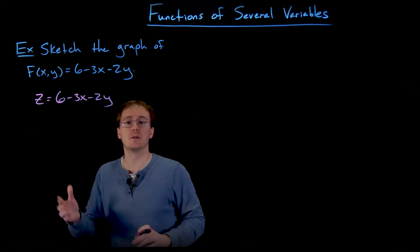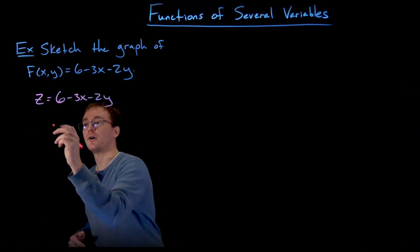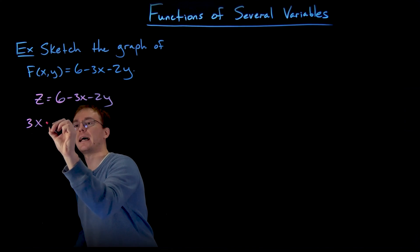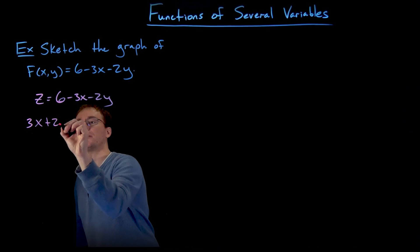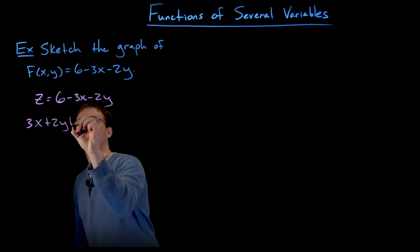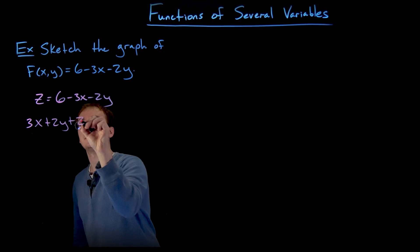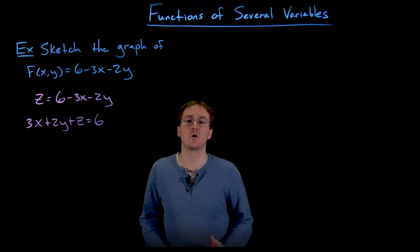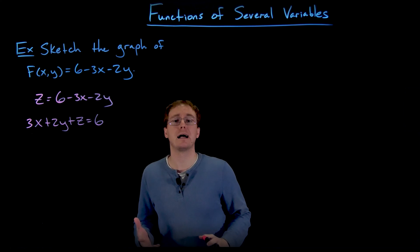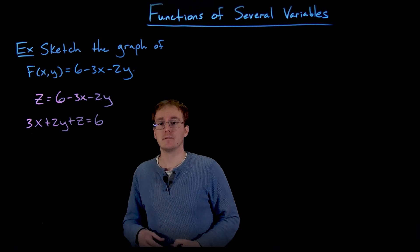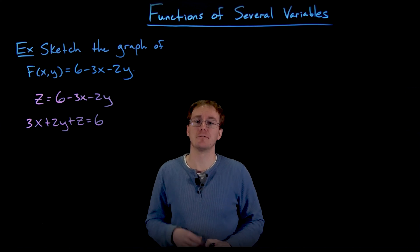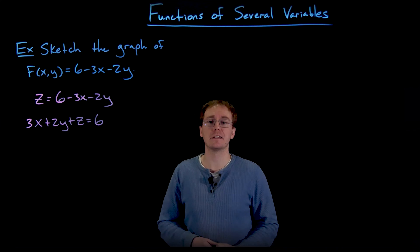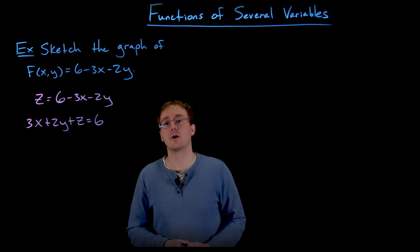We might move some things around, put all of our variables on the same side, and rewrite this as 3x plus 2y plus z equals 6, just to make it a little bit more recognizable as a plane. Whenever we have these linear equations involving x, y, and z, we have to remember that these are representing planes.